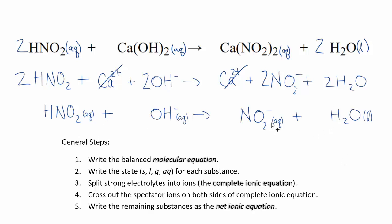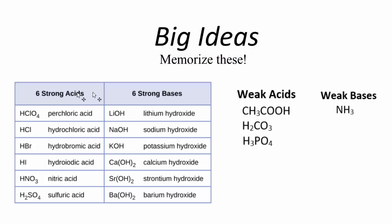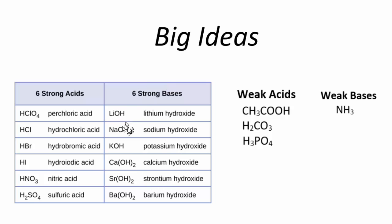Strong acids and strong bases dissociate completely — they're strong electrolytes and we separate them into ions. Weak acids and bases are written as aqueous but are not dissociated, so we leave them together. Memorize the strong acids and the strong bases (group 1 and group 2 hydroxides). The weak acids are essentially everything else — acetic acid (CH₃COOH) and phosphoric acid are good ones to know. For weak bases, NH₃ is the key one, and we'll see that next.